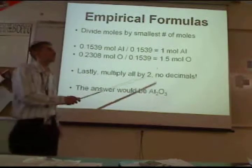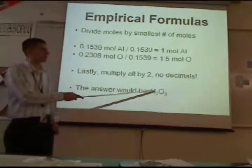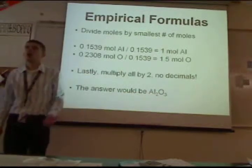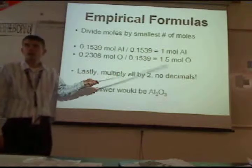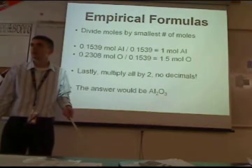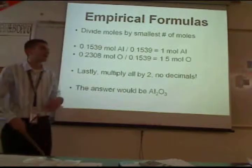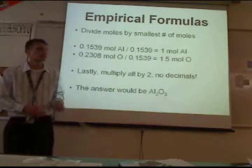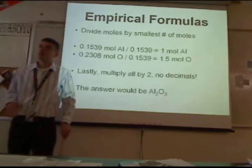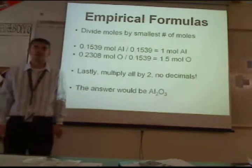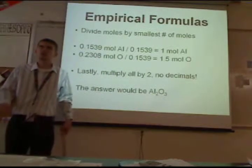So instead of Al1, O1.5, you double it. So you have Al2O3. You might also get a situation where you end up with something like 2 and 4, which wouldn't be an empirical formula either. So sometimes you might need to double subscripts to get whole numbers, and sometimes you might need to divide them to reduce it to the lowest terms — because Al2O4 is not an empirical formula.